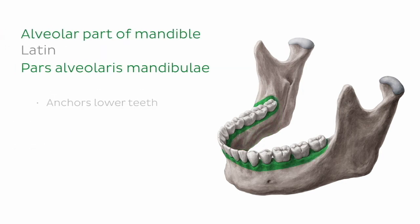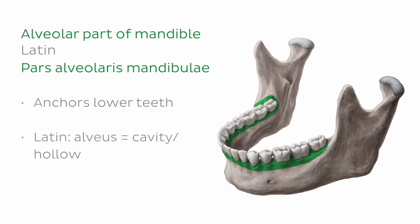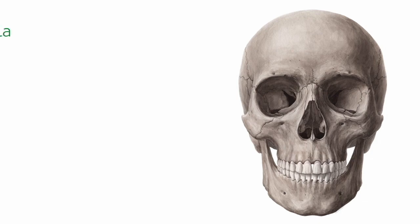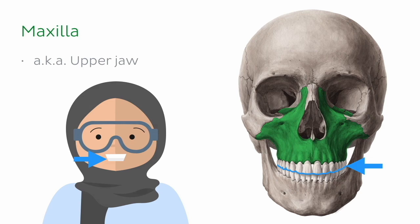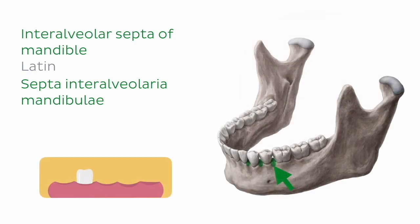The alveolar part of the mandible anchors all 16 of your lower teeth — that is, if you don't choose boxing as a career! Alveolar originates from the Latin word alveus, which means little cavity or hollow, pertaining to the little cavity which each tooth sits in. The other 16 upper teeth can be found anchored in the paired maxillae. The maxilla, also known as the upper jaw, is a bone of the viscerocranium which lies just superior to the mandible. The body of the mandible articulates with the maxilla via the teeth when you close your mouth. Separating each adjacent dental alveoli is a thin plate of bone known as the inter-alveolar septum of the mandible. These septa ensure that the teeth have enough space to grow.